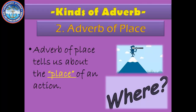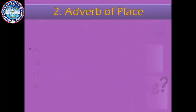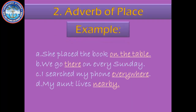The second kind is adverb of place. Adverb of place tells us about the place of an action — it points out where an action occurs. For example, 'She placed the book on the table.' Where did she place the book? On the table. So 'on the table' is an adverb of place. Second example: 'We go there on every Sunday.' Where do we go? There. So 'there' is an adverb of place.